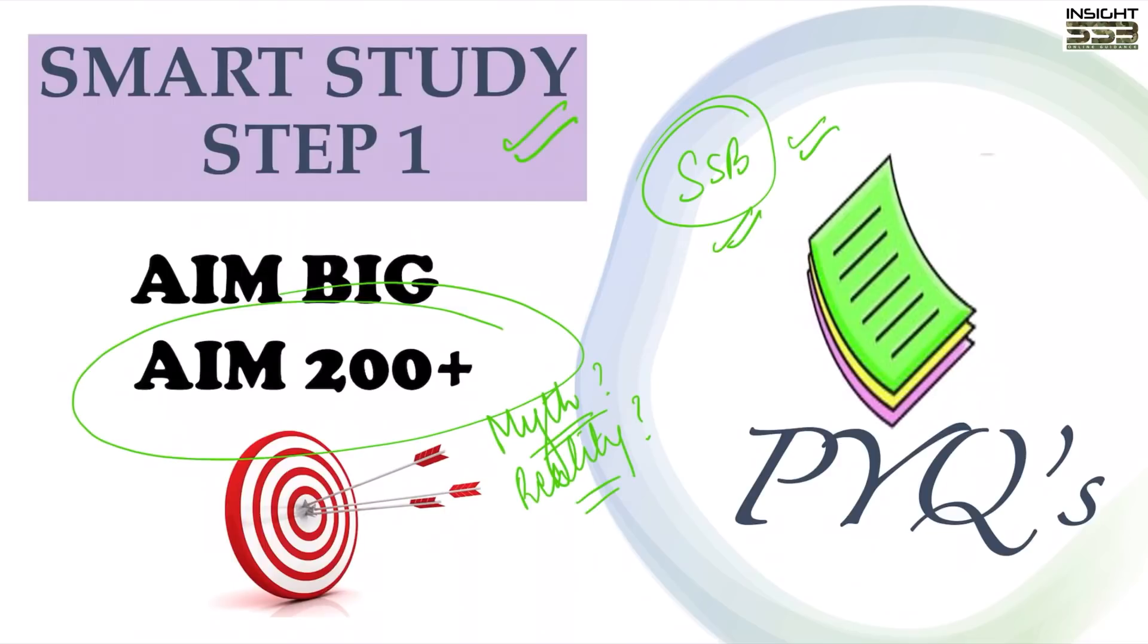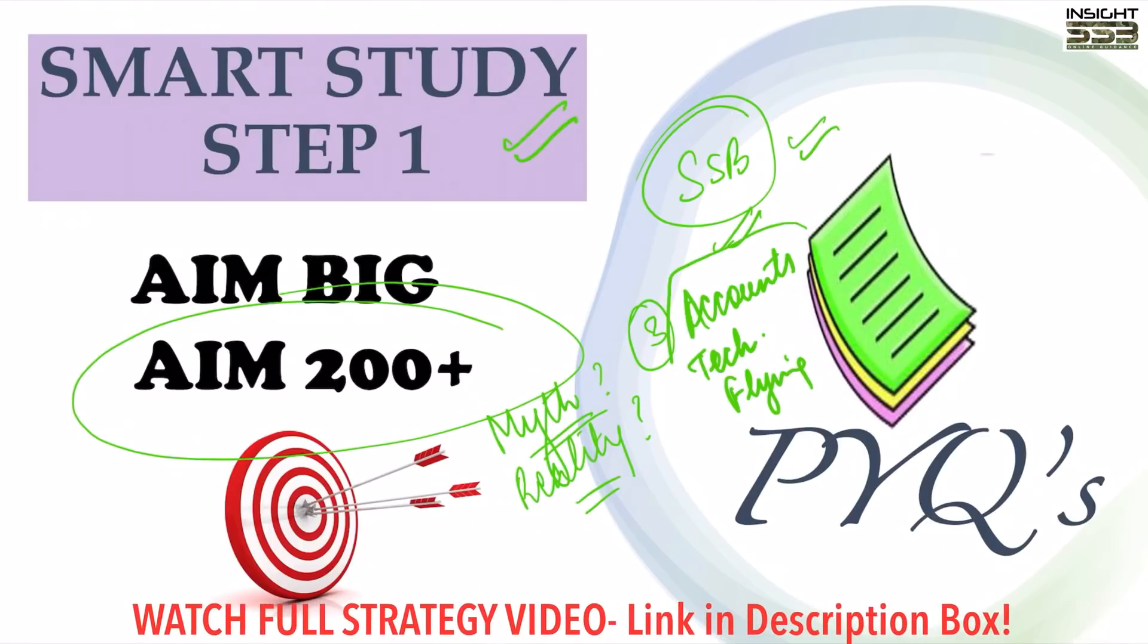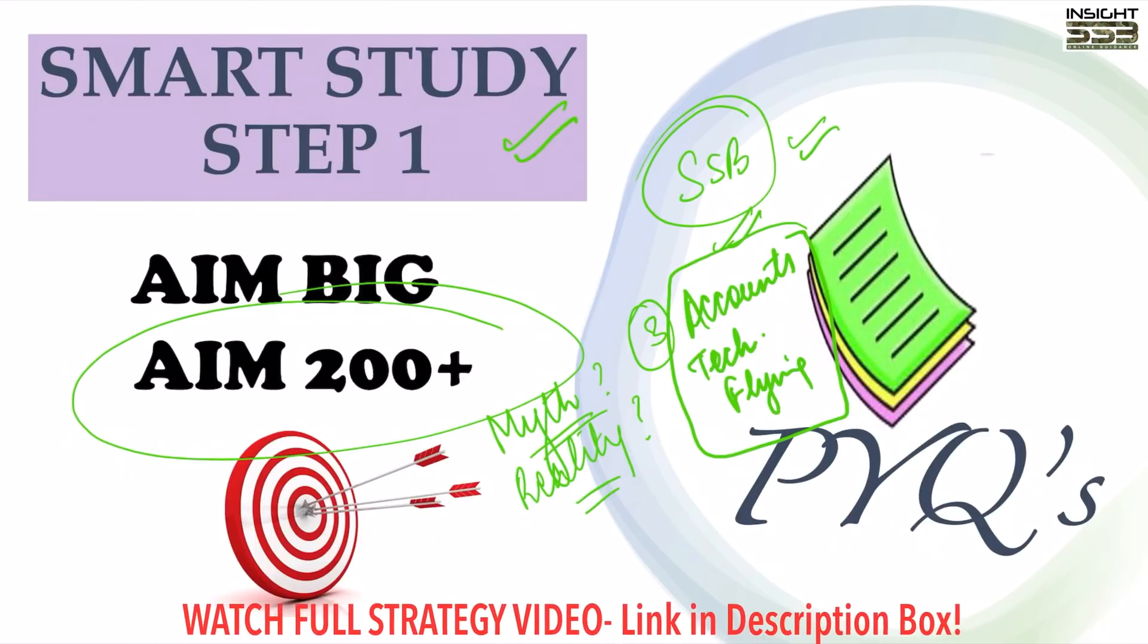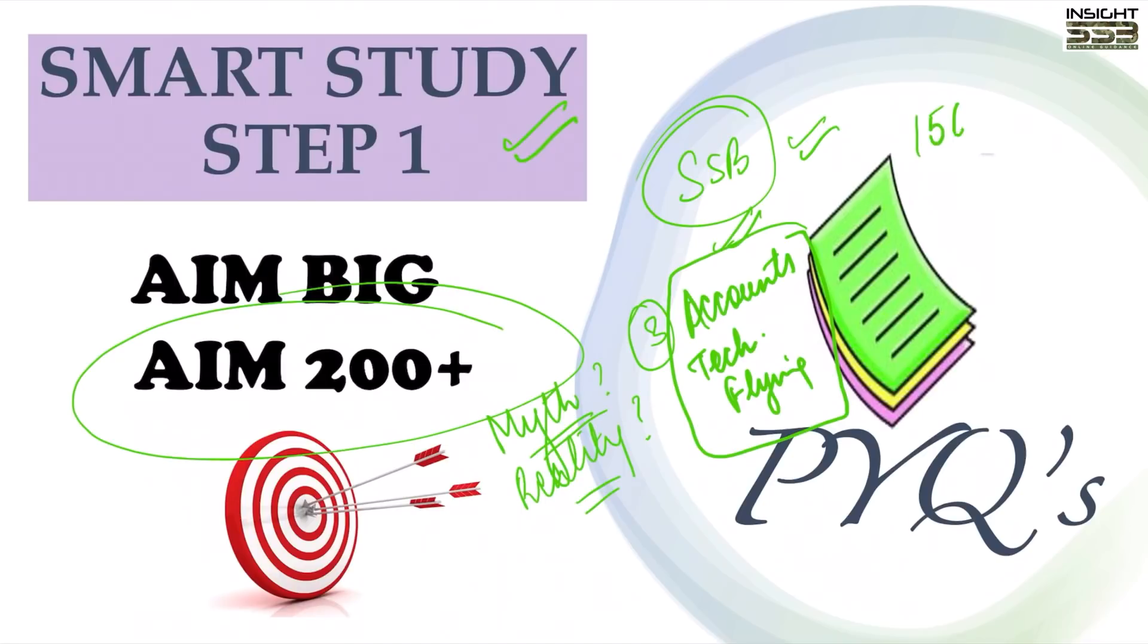If you talk about myth, 200 plus is a myth for three categories. If you are from accounts department, if you want to go to technical side, or flying branch - in these three branches, there is no utility of 200 plus marks. There were people who were there with me with just 156 marks, 155 marks. With certain marks, they have also got into academy.